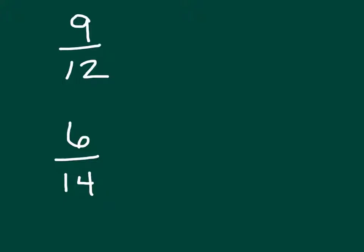Let's do a couple examples. So this top one we have 9 twelfths. I know that I can divide a 3 out of both the top and the bottom. 9 divided by 3 is 3, 12 divided by 3 is 4,